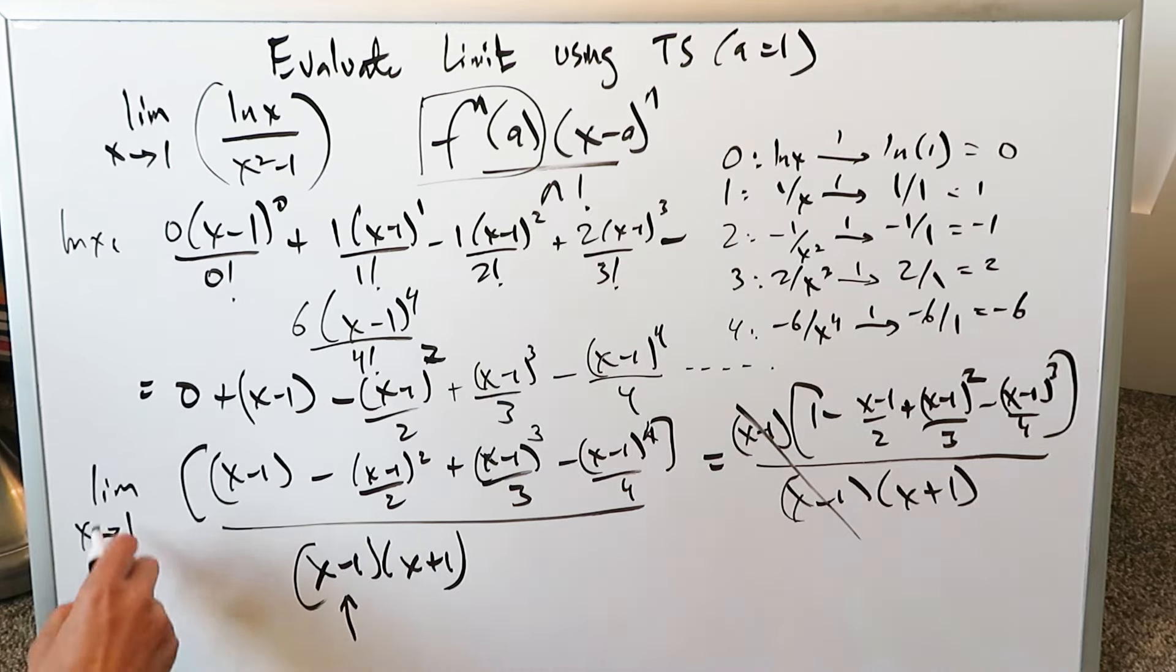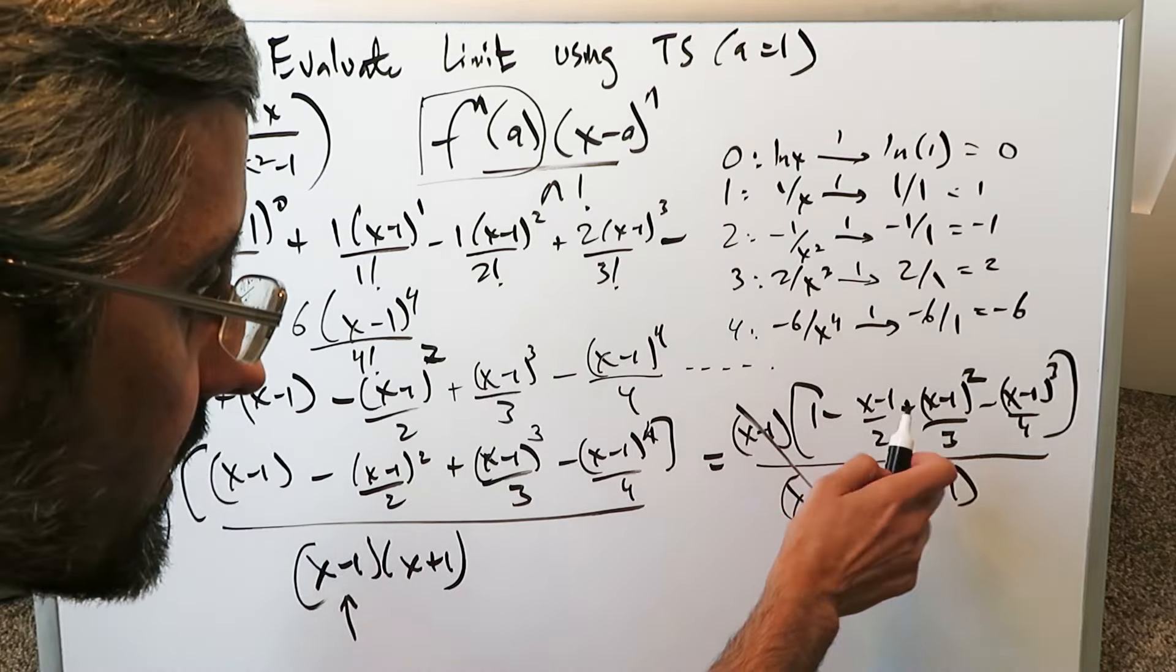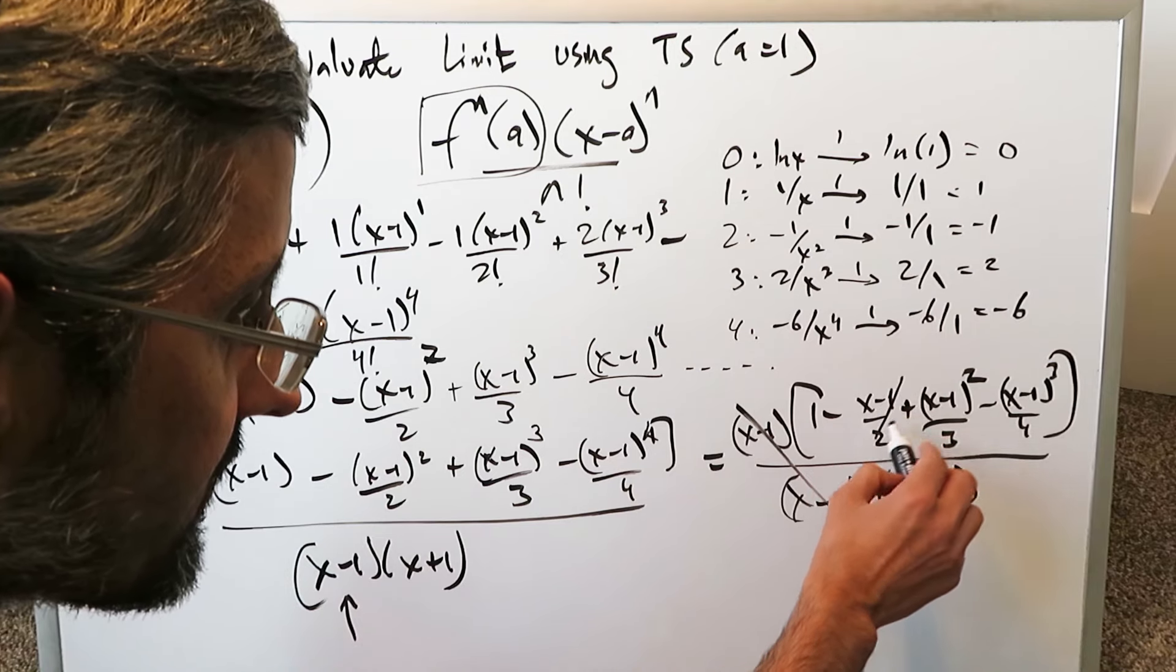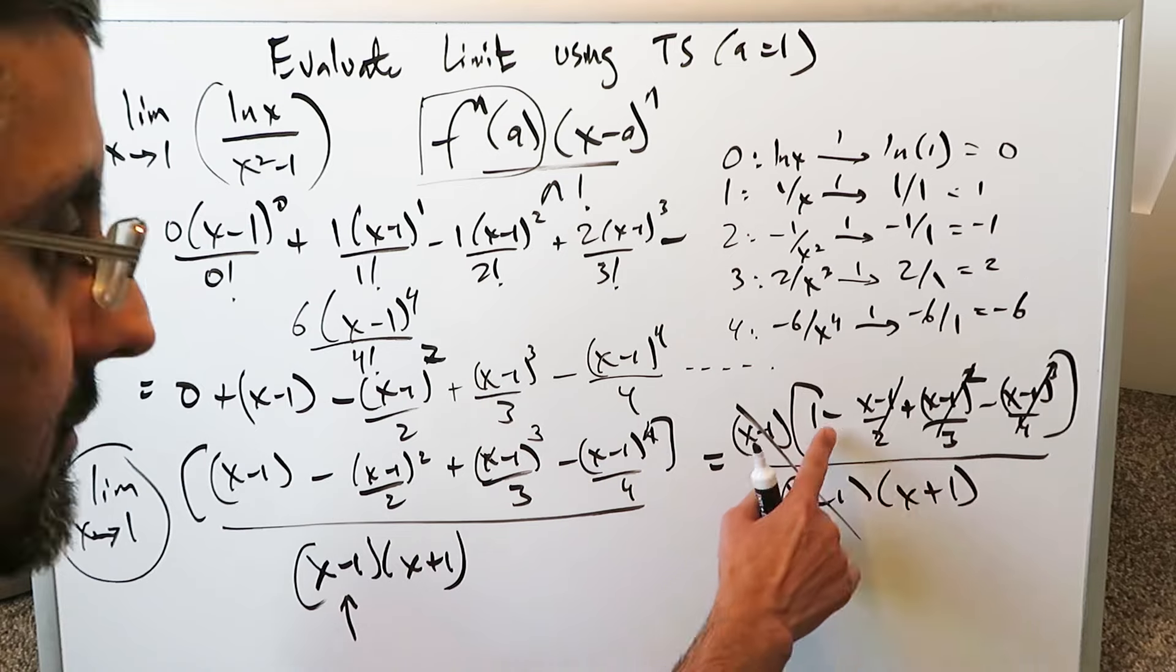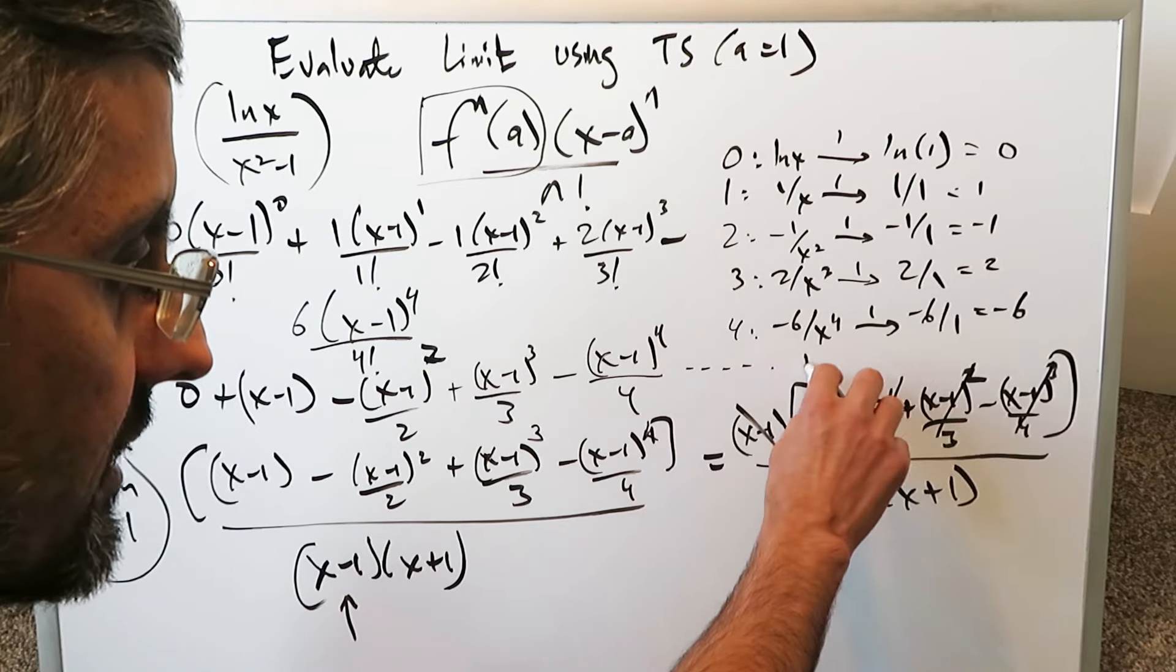Now look at what remains. Apply your limit. Limit as x approaches 1. When you put x approaching 1, 1 minus 1 is 0. This will zero out, this will zero out, this will zero out. What in essence will remain is this 1 in the numerator and you can see it.